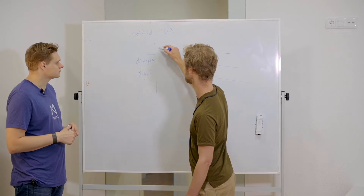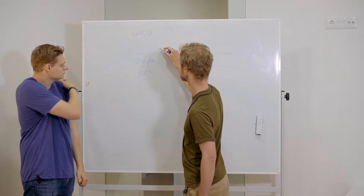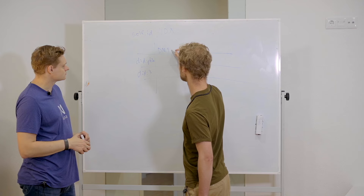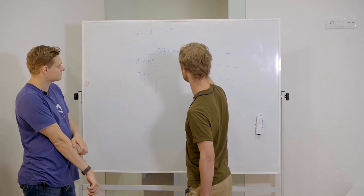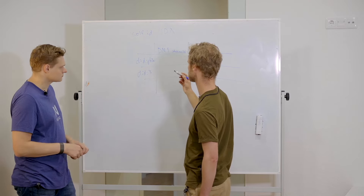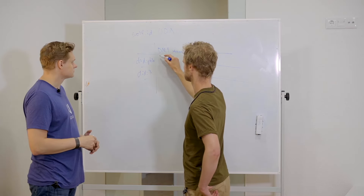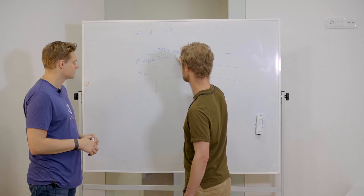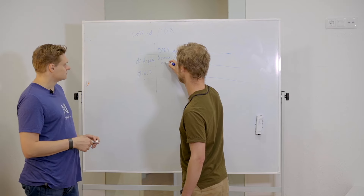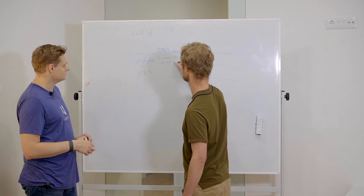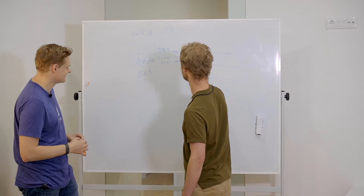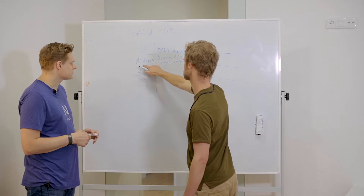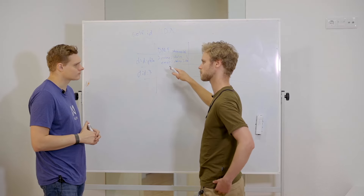We have something called data models, which are represented as streams in Ceramic. A data model might define a schema like: 'name' as a string, 'favorite emoji' as a two-character string. When a user creates an entry, the stream has an additional feature — you can specify a JSON schema at genesis, and the state object must conform to that schema. The data model also contains metadata like a name and description. An application developer that finds a useful data model can import it into their app and pull that data for all users, confident the data will match the expected format.